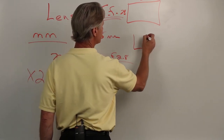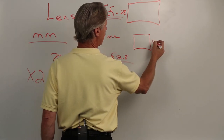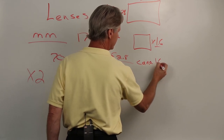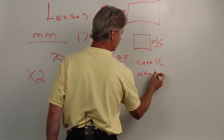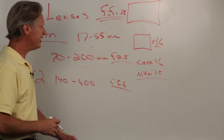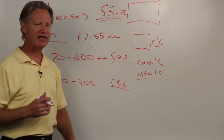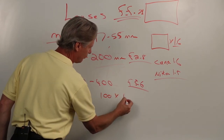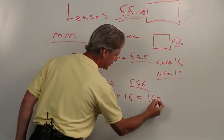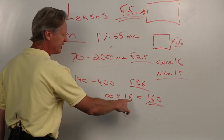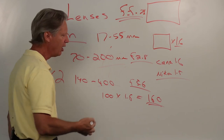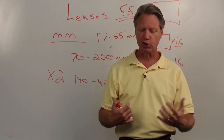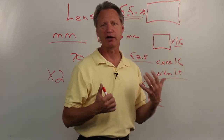Newer cameras have a much smaller chip, and as a result there is what's called a crop factor. If you have a Canon camera it's 1.6; if you have a Nikon it's 1.5. That means you multiply whatever lens you have by that factor. So a 100mm lens times 1.6 equals 160mm — that 100mm lens, because you have a small sensor camera, automatically becomes a 160mm lens.